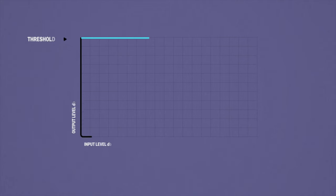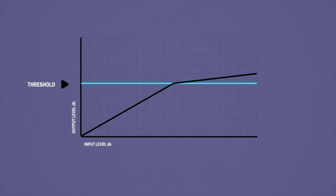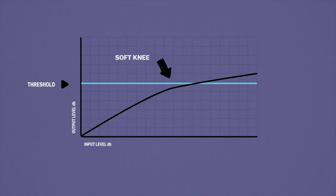Our final control is knee, which is used to control how much compression is applied as the signal approaches the threshold. A zero dB or hard knee means that no compression will be applied until the threshold has been reached. The more you increase the knee, the more it will gradually apply compression as the signal approaches the threshold. Hard knee will give you a more aggressive style of compression, whereas a softer knee will result in a more transparent or smoother feel.